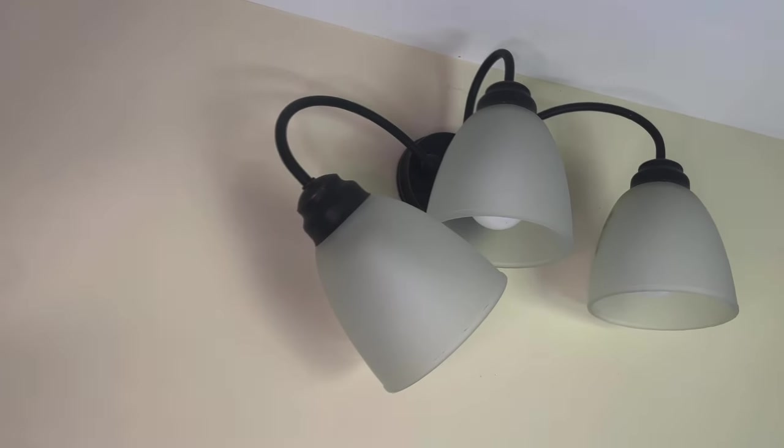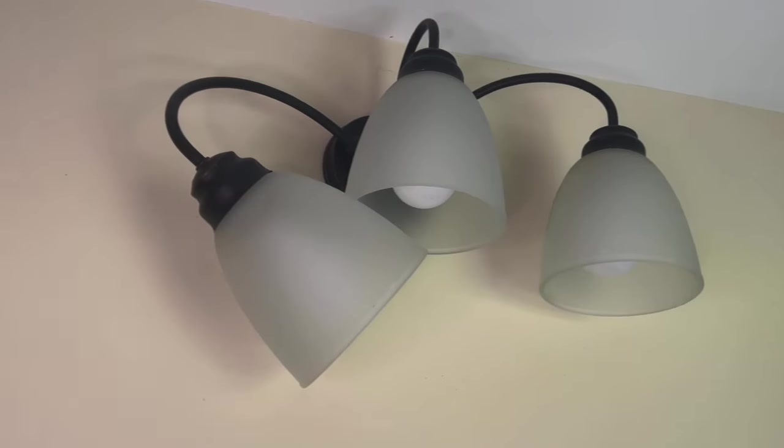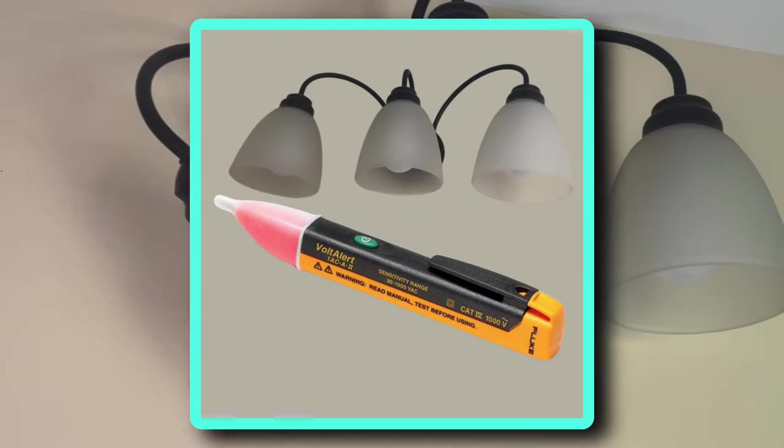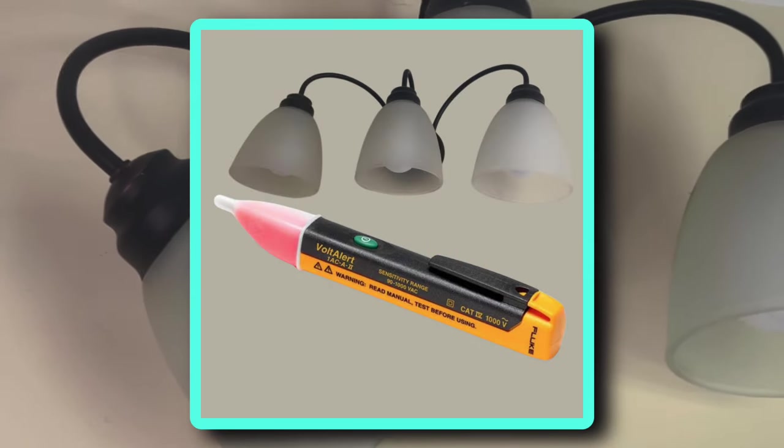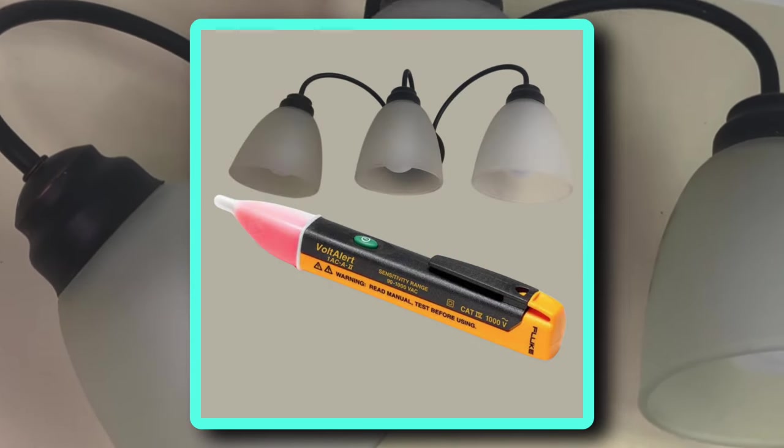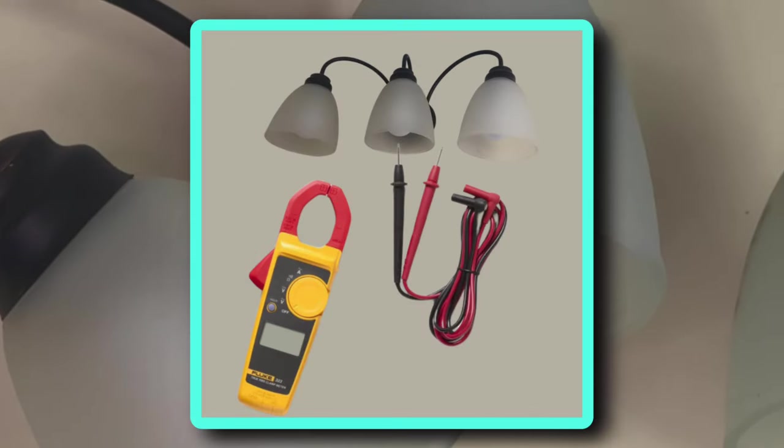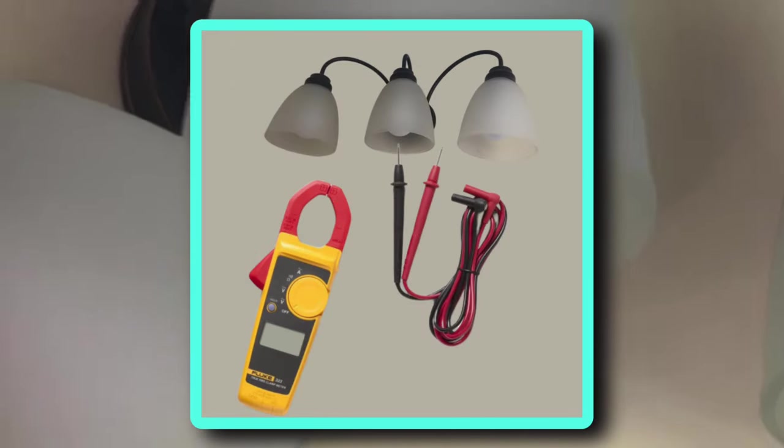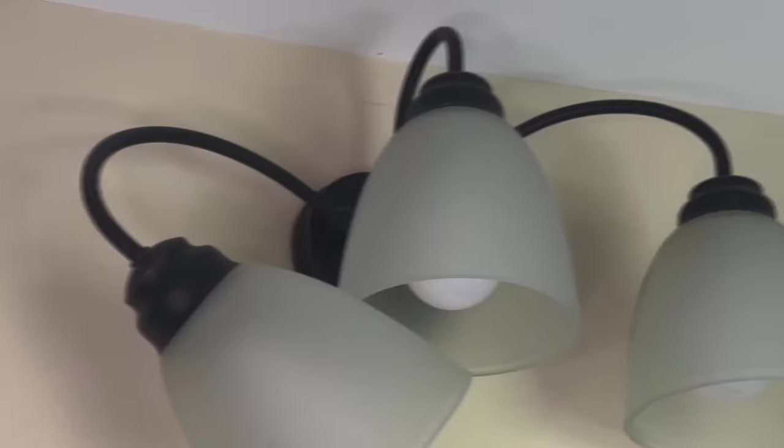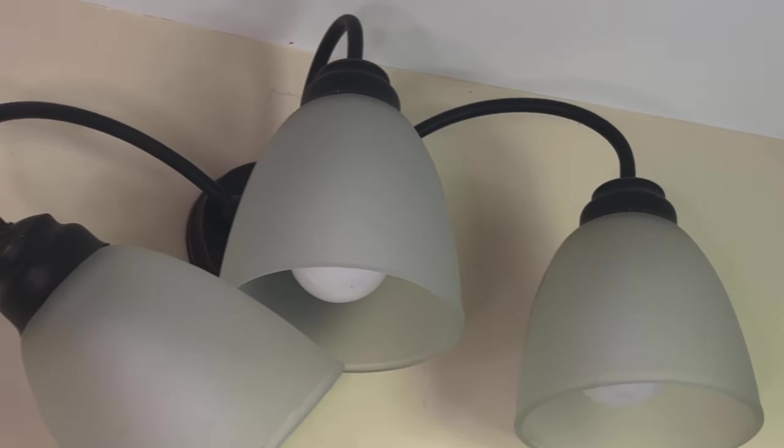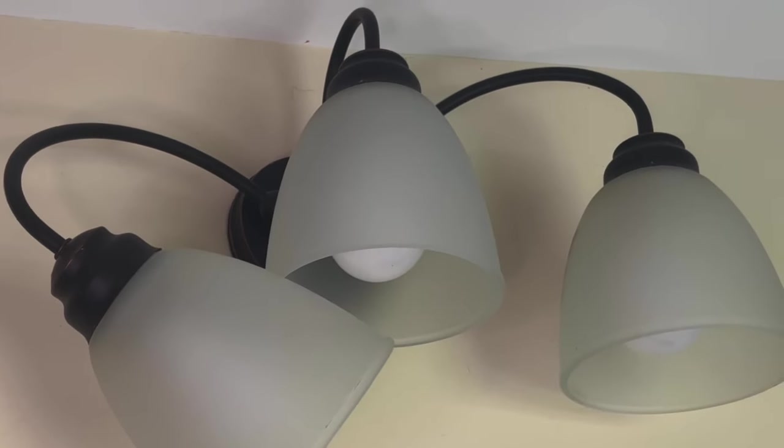So I know there's no power going to that fixture. You can use a voltage tester like this, but I don't particularly like these. Some people swear by them. Or you can use a voltmeter like this one. I'm confident that the switch is off, so I'm not going to use a meter, but I highly suggest that you do.